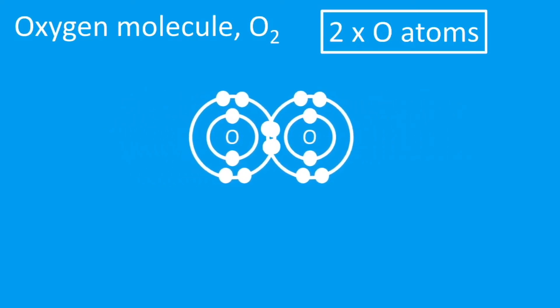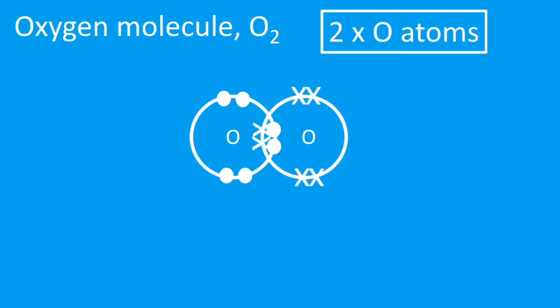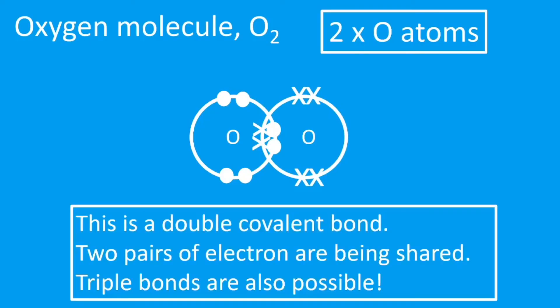Now there's only two atoms here, so to form two covalent bonds it actually is a double bond here. So there's two pairs of electrons being shared, so there's two dots and two crosses in the middle there. So that's a double covalent bond. We'll also see triple covalent bonds in some cases, so we do get multiple covalent bonds.